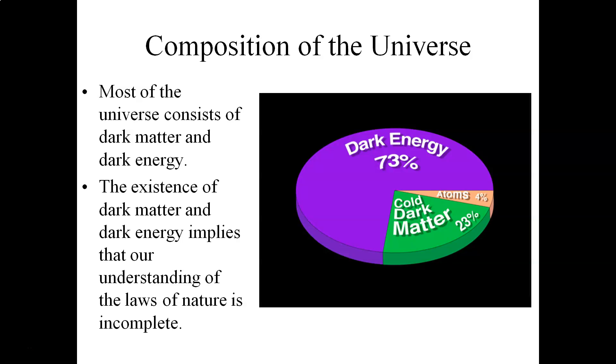The universe itself is primarily composed in terms of just its total amount of energy and mass. It's primarily composed of dark energy. Almost 75% of the universe is dark energy. And then the remainder of the universe is mostly what is called dark matter. Dark matter is the subject of another screencast. And then only a small percentage of what is left over consists of ordinary atoms and ordinary matter that we see in galaxies, stars, planets, and so on.